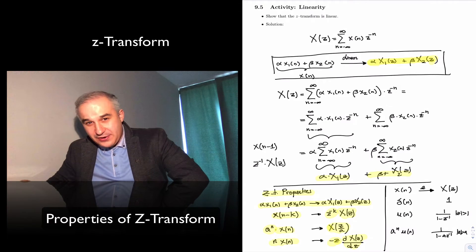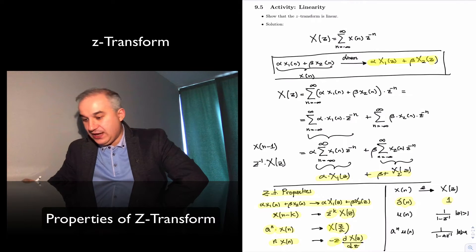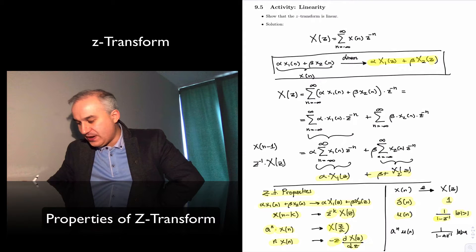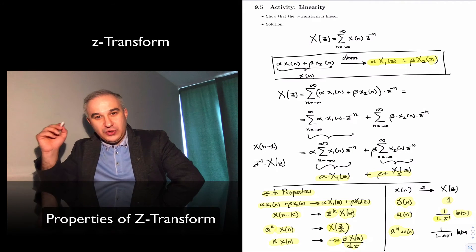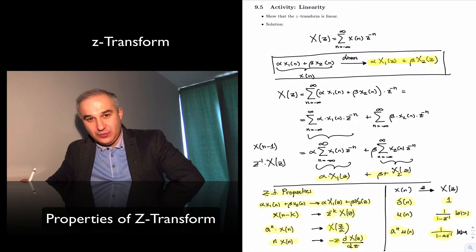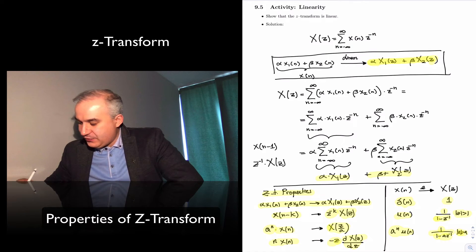Important transform pairs: at minimum, you should know that the C-transform of the delta function is 1, which is easy to derive. The C-transform of the unit step is 1 over 1 minus C to the minus 1, with region of convergence for absolute values of C greater than 1. And the C-transform of A to the n times U of n is 1 over 1 minus A times C to the minus 1, used quite a lot in IIR filters, for |C| greater than A.